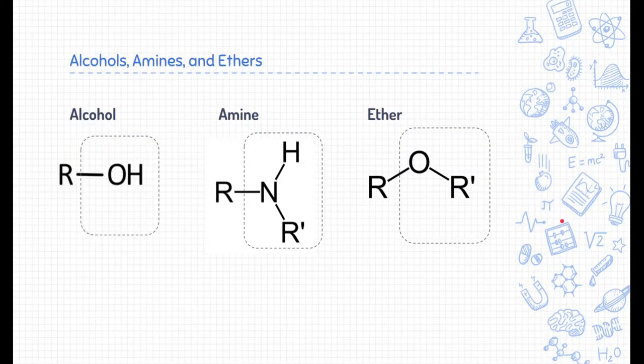The next set of functional groups we're going to see are alcohols, amines, and ethers. Alcohols are in many of the alcohols you're used to, such as rubbing alcohol or methanol and ethanol. In fact, rubbing alcohol, like methanol and ethanol, end in O-L. Rubbing alcohol is also named isopropanol.